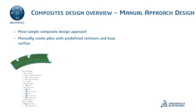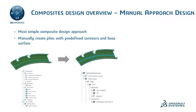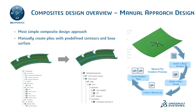The manual design approach is the simplest approach within 3D Experience composites. This approach is typically used when design complexity is low, meaning a small number of plies, ply drop-offs are minimal, etc. For this approach, the user defines each ply manually using contours and support surface.